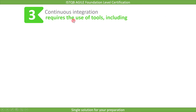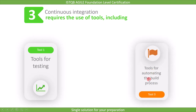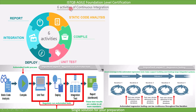Continuous integration requires the use of tools, including tools for testing, tools for automating the build process, and tools for version control. In this lecture, we covered the six activities of continuous integration: static code analysis, compile, unit test, deploy, integration test, and report. Then we saw two aspects of continuous integration — regularly running automated tests and regression testing. We also saw how continuous integration helps in continuous quality control. In the next lecture, we will cover the benefits and risks of continuous integration.